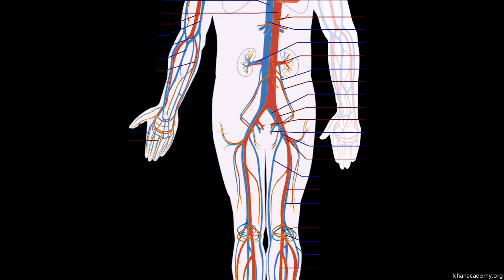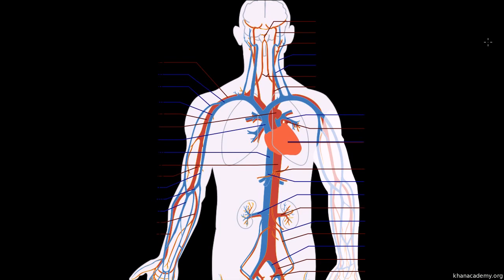I copied this diagram of the human circulatory system from Wikipedia. Here in the back you can see the lungs, and the heart is sitting right in the middle. What we learned in the last few videos is that we have our little alveoli in our lungs — we get to them from our bronchioles, which branch off the bronchi, which branch off the trachea, which connects to our larynx, then our pharynx, then our mouth and nose. We have our little alveoli right there, and then we have the capillaries.